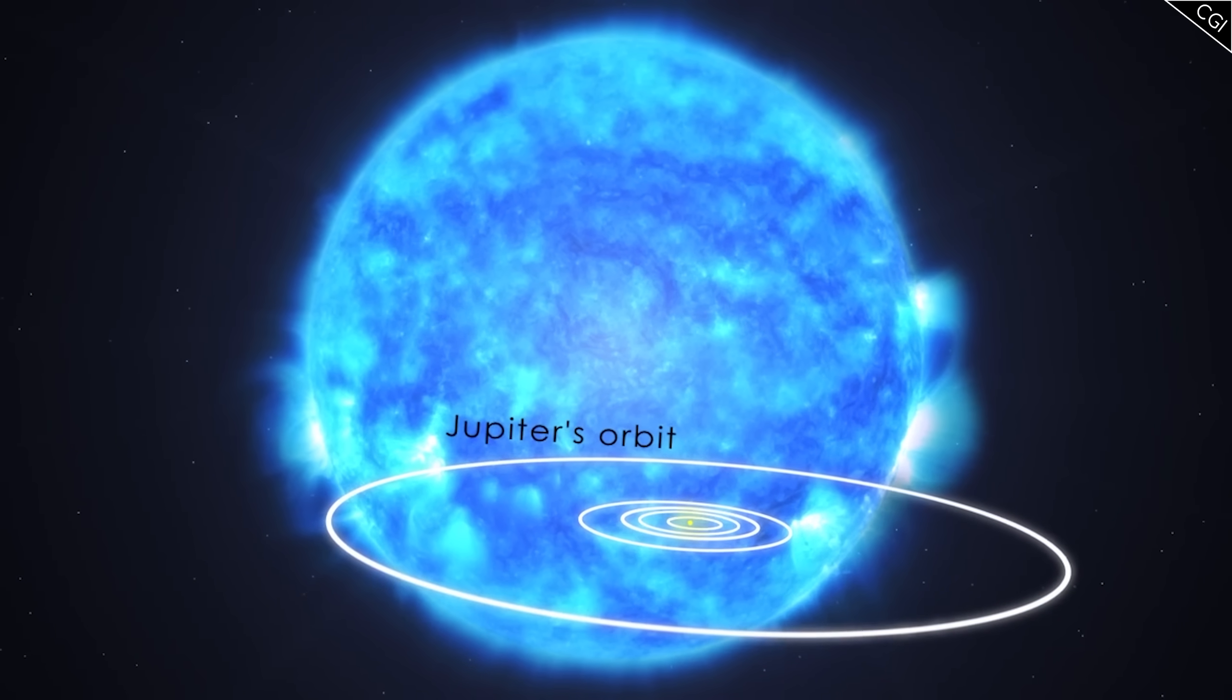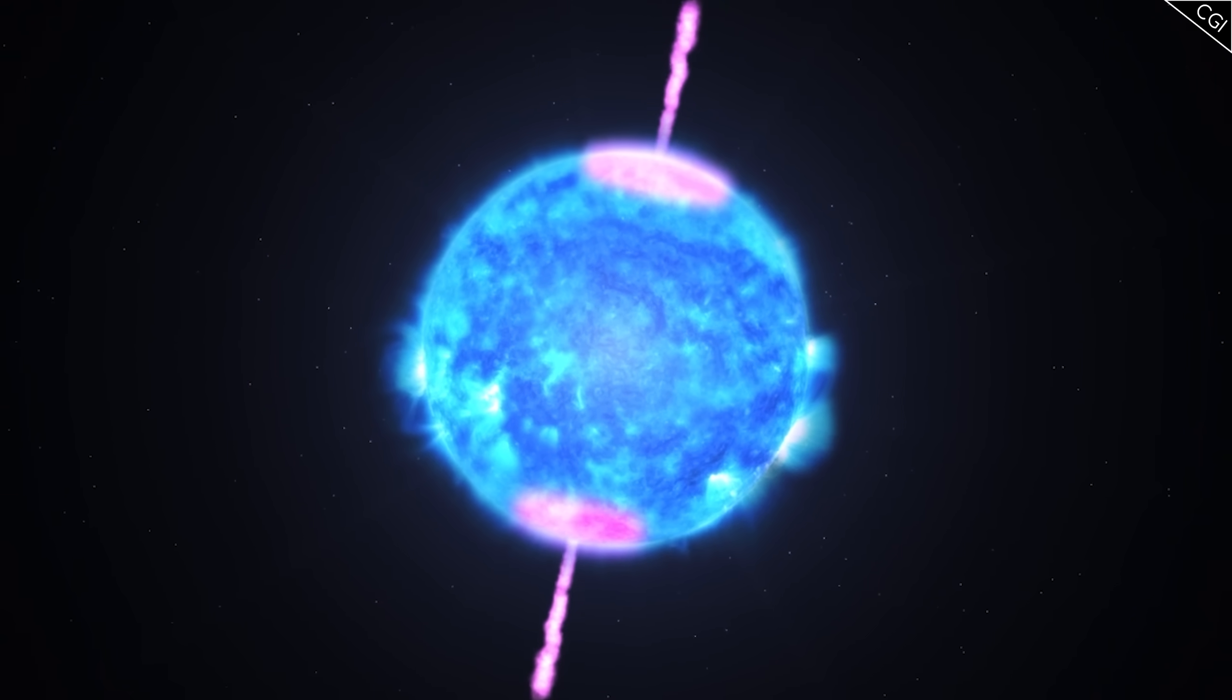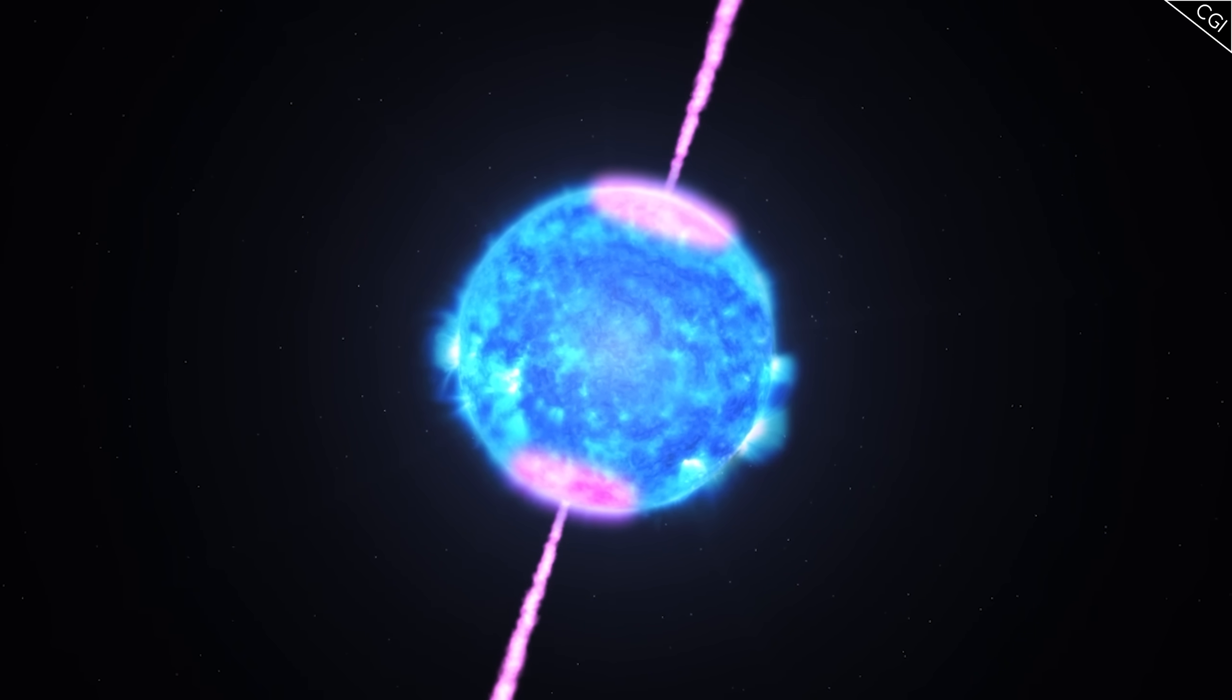Once you turn the second star into something like a blue supergiant, there really won't be a place in the system where there is even a hope of habitability.